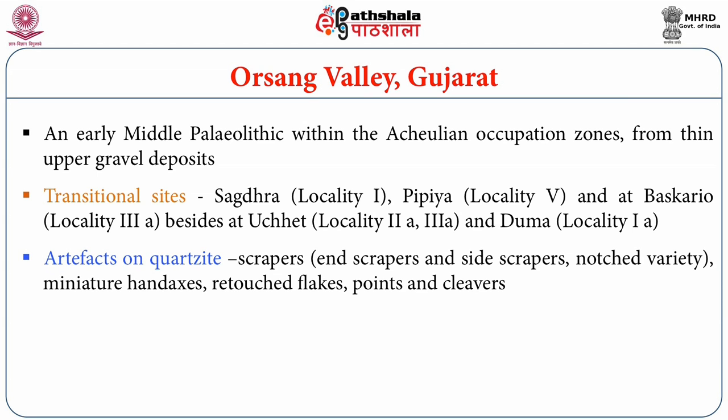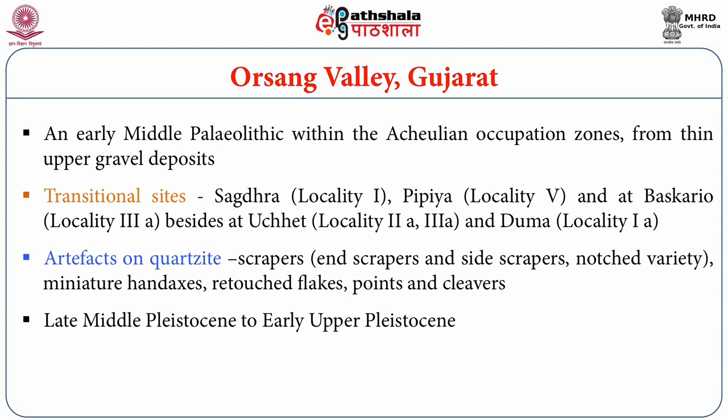Artifacts were made from quartzite and the types included scrapers, end scrapers, side scrapers, notches, miniature hand axes, points, and miniature cleavers. These have been tentatively dated to the late Middle Pleistocene to early Upper Pleistocene in that region.